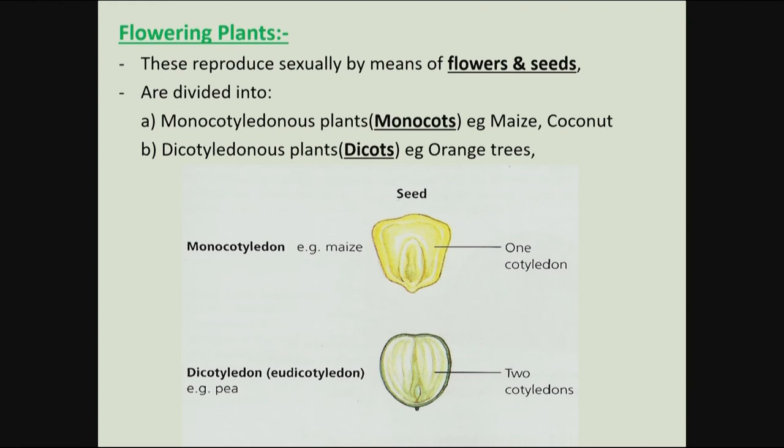Flowering plants reproduce sexually by means of seeds. The flower gets pollinated, then fertilization happens, then the flower dries up and develops into a fruit with seeds inside.